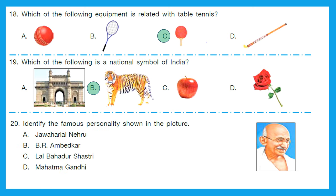Question 20: Identify the famous personality shown in the picture. I think everyone knows this answer. Is it Jawaharlal Nehru, B.R. Ambedkar, Lal Bahadur Shastri or Mahatma Gandhi? The right answer is option D — he is Mahatma Gandhiji.